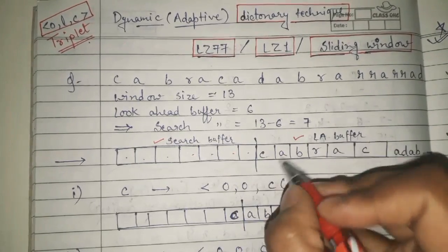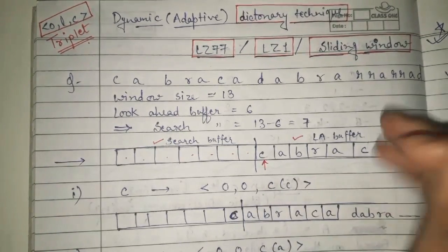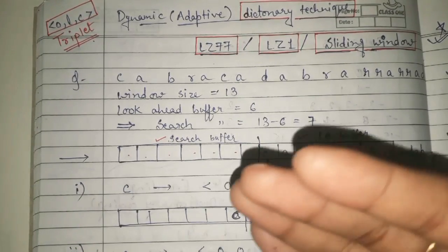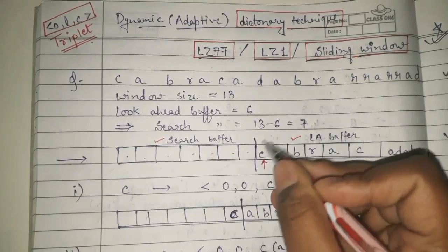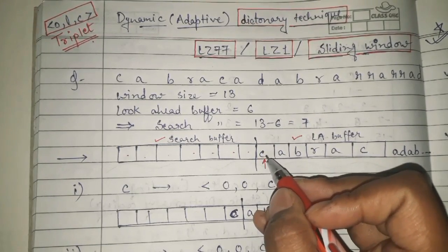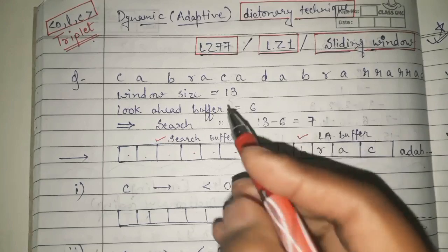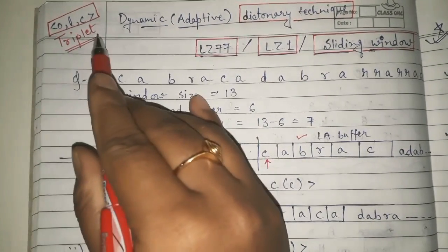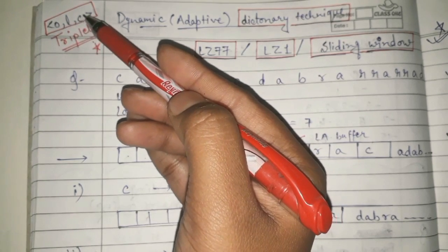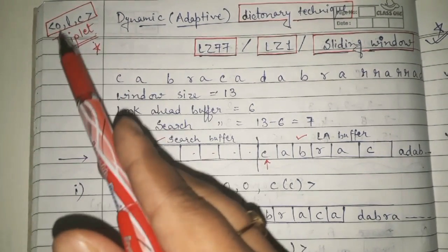The idea is to encode elements one by one from the look-ahead buffer. In LZ77 we work with triplets. The triplet is (O, L, C) where O is the offset, L is the length of the match, and C is the code word to be encoded next.